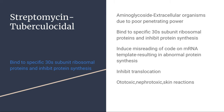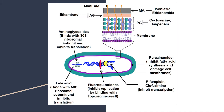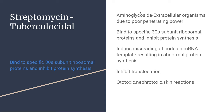The last first-line drug to discuss is streptomycin, which is an aminoglycoside. Aminoglycosides act by binding to specific 30S ribosomal subunit proteins, inhibiting protein synthesis. They also induce misreading of the code on the mRNA template, resulting in abnormal protein synthesis, and they inhibit translocation. Side effects include ototoxicity, nephrotoxicity, and skin reactions. Streptomycin has poor penetrating power, which is why it is only applicable against extracellular bacteria.